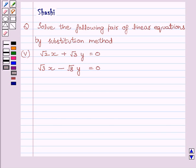The question is solve the following pair of linear equations by substitution method. The first equation is root 2x plus root 3y is equal to 0, and the second equation is root 3x minus root 8y is equal to 0.